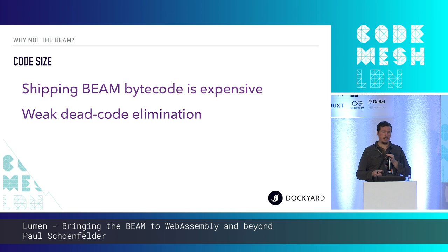Even when you strip the debug information from the BEAM files, they're still huge. Just one of my libraries I maintain, Timex — just the BEAMs of that not including the standard library BEAM files — is almost a megabyte in size with stripped debug information. When you take into account the entire dependency tree of an application, it's tens of megabytes, which is completely ridiculous on the web. You're targeting less than a megabyte for the complete application ideally.